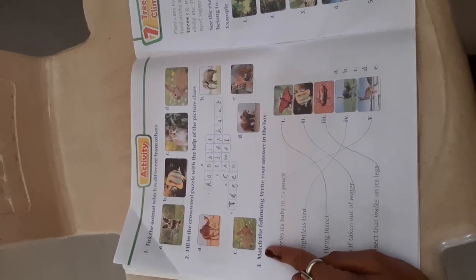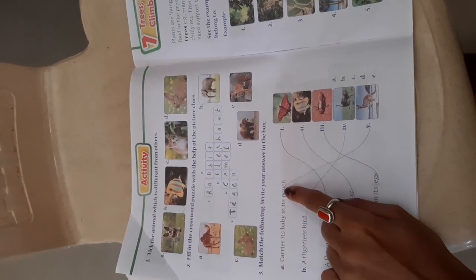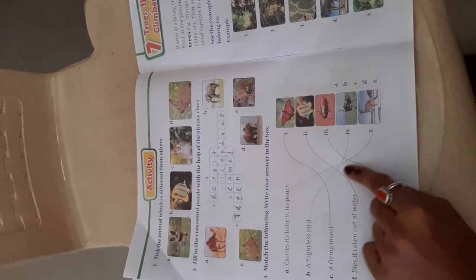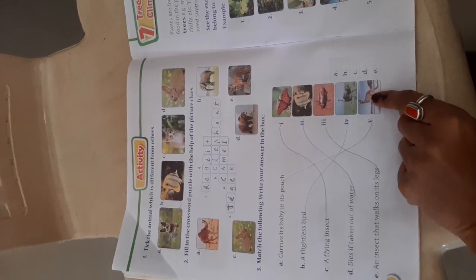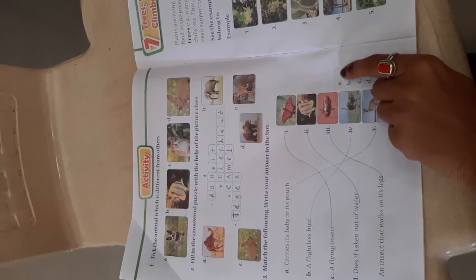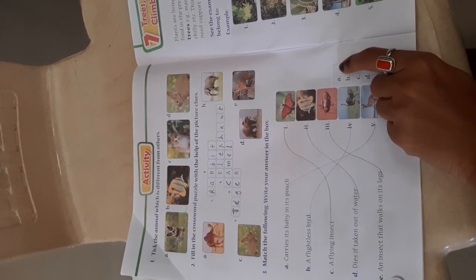Now Activity 3 is match the following. Write their answer in the box. Carries its baby in its pouch - which animal carries its baby in a pouch? It is kangaroo. So you have to tick mark here and write A, number 5 in the box.